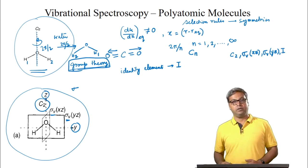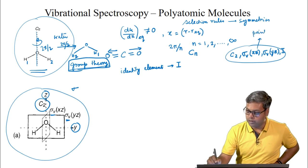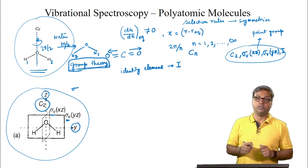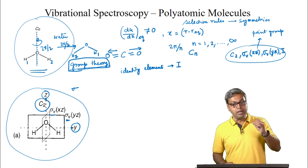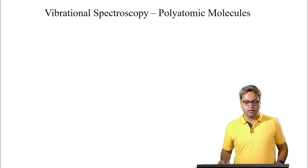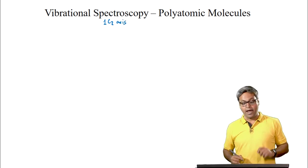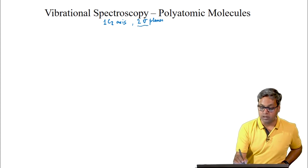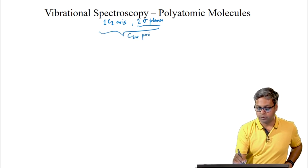The symmetry elements of a molecule constitute something known as the point group. The point groups are so called because when all the operations of the group are carried out, at least one point is unaffected. In the case of water, any point on the C2 axis is unaffected. As water contains one C2 axis and two sigma planes of symmetry all of which contain the C2 axis, water belongs to the C2V point group.